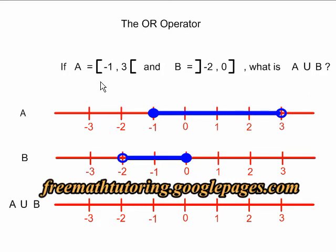Set A is from negative one included to three not included and is illustrated here. Set B is from negative two not included to zero included and is illustrated here.